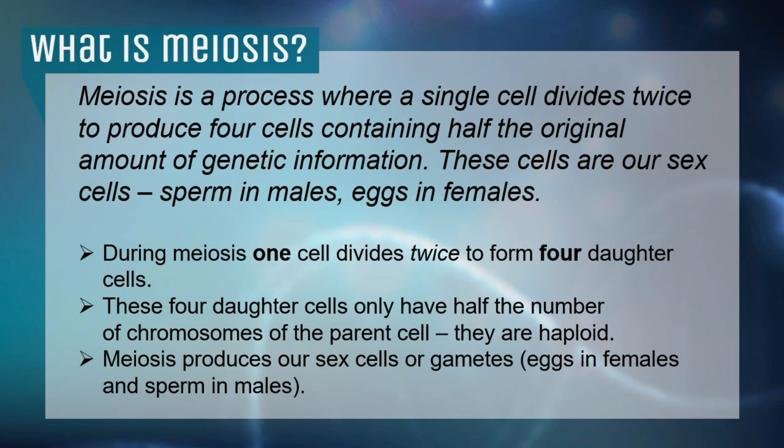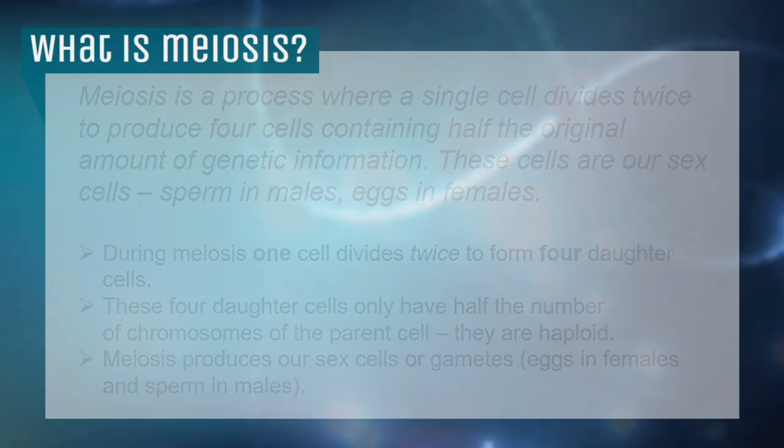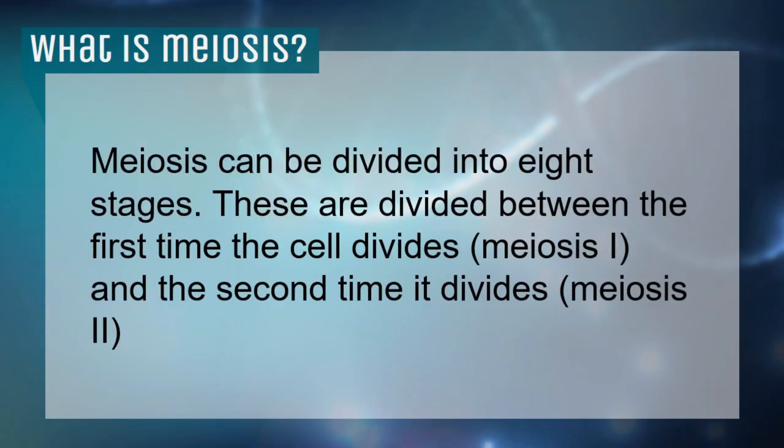These daughter cells are genetically unique to each other. The cells that have been made are sex cells — the sperms and the eggs. So meiosis focuses mainly on producing sex cells or gametes. Since meiosis is a process, it has stages which cells undergo. Meiosis can be divided into eight stages, divided between meiosis I and meiosis II. Mitosis and meiosis undergo the same stages, but unlike mitosis, meiosis goes through the stages twice.